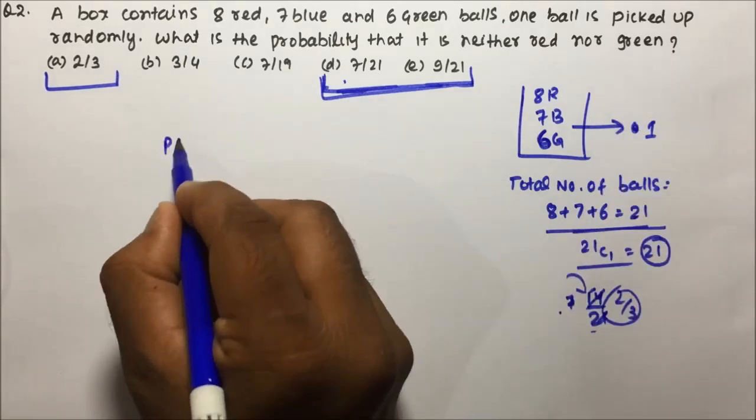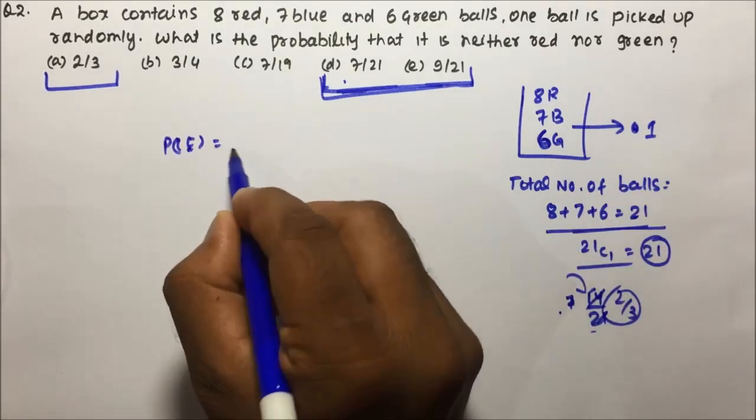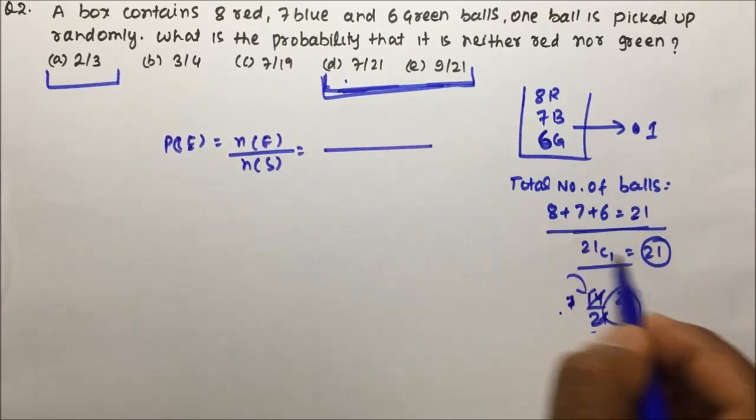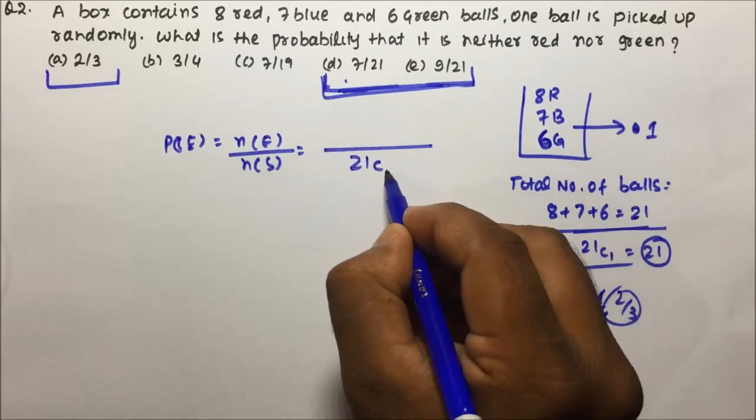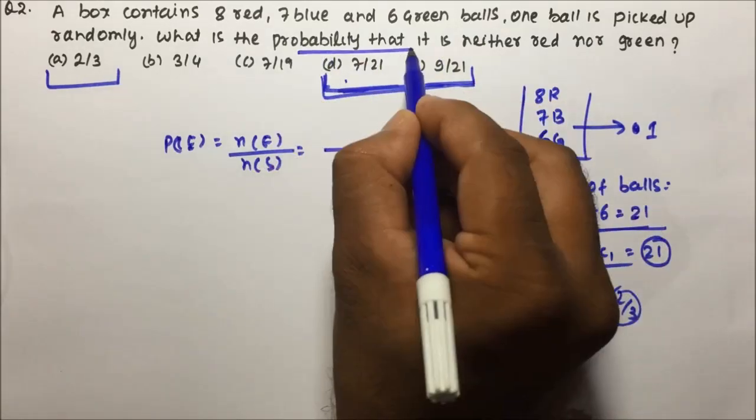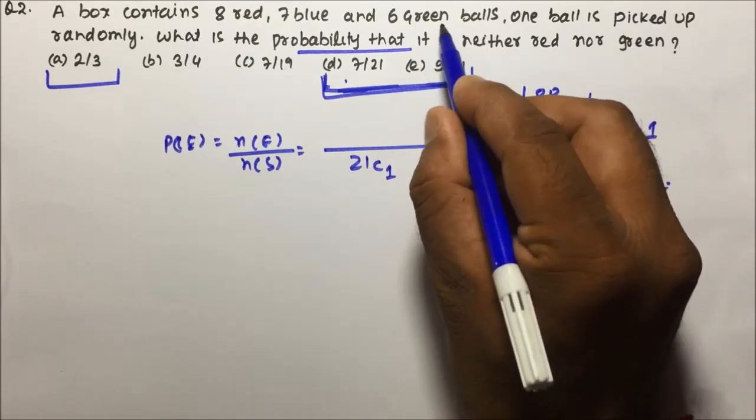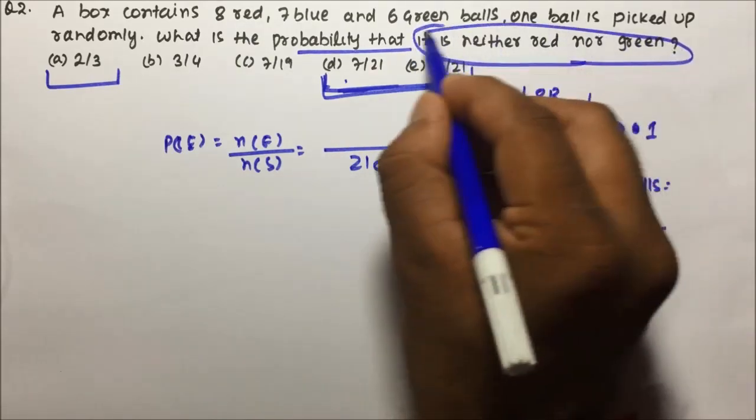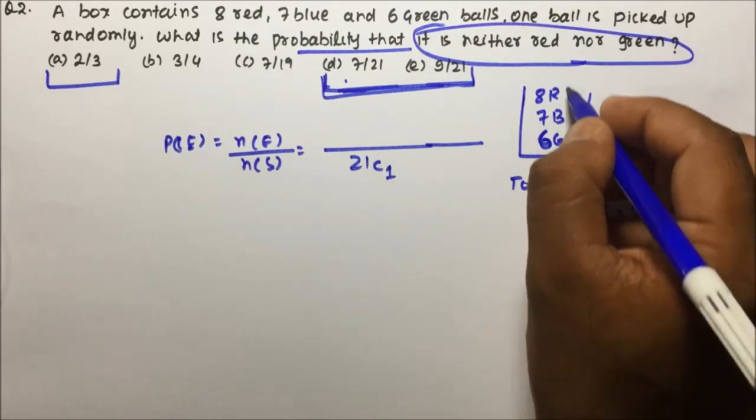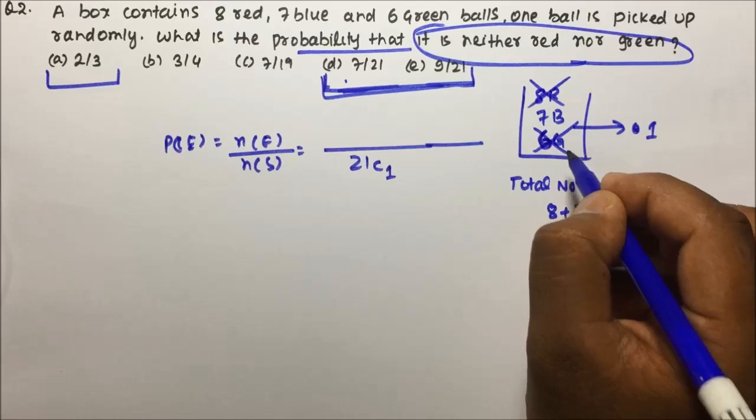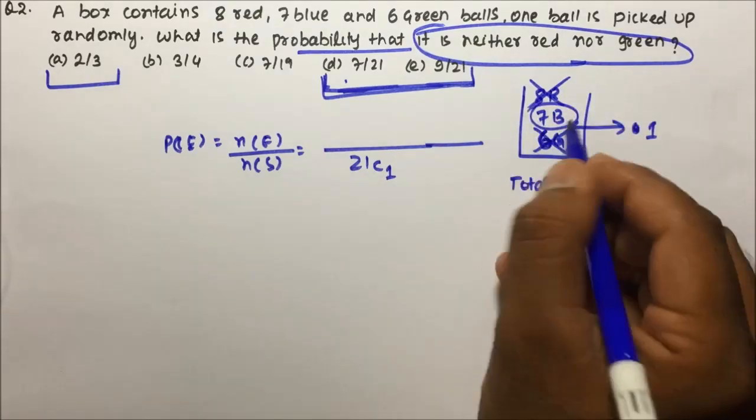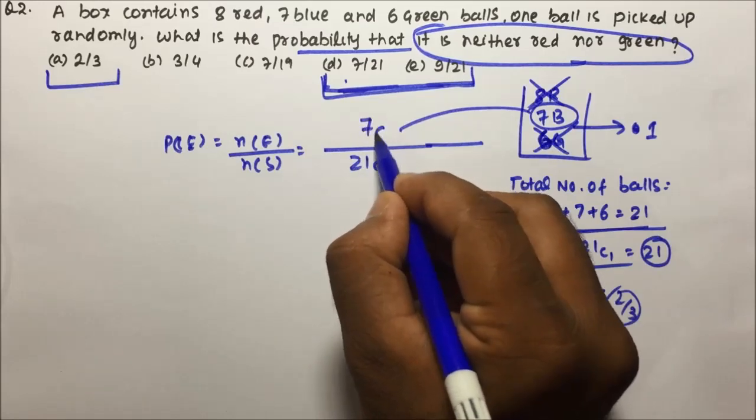Probability is the one formula which we are using throughout probability: Ne by Ns. So Ns, total number of balls is 21 and you are going to draw 1 ball. What is the probability that it is neither red nor green? So it is neither red and nor green. So do not take from red and do not take from green. So what will be there? So select from the blue, so 7C1.